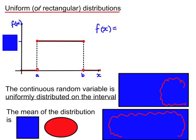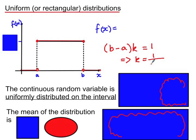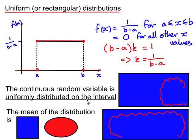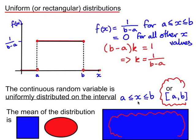If we know we're dealing with a uniform or rectangular distribution and we know the values of a and b, we can work out k because the area of the rectangle must be 1 and its length is b − a. So (b − a) × k = 1, which means k = 1/(b − a). We can therefore define the probability distribution as f(x) = 1/(b − a) for values of x between a and b, and 0 for all other x values. We say that the continuous random variable is uniformly distributed on the interval a ≤ x ≤ b.